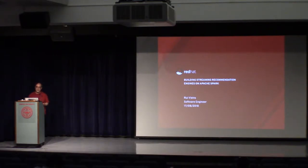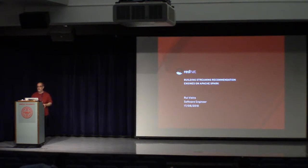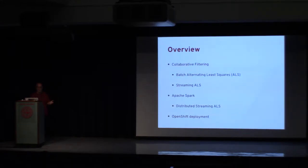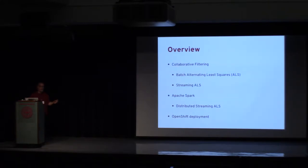I'd like to talk about batch recommendation engines, which is a common approach, and also how easy it is to build distributed recommendation engines on one hand. On the other hand, building them in a streaming and distributed way can be tricky. I'll introduce collaborative filtering, the two variants — batch alternating least squares and streaming alternating least squares — Apache Spark, and an implementation called distributed streaming ALS. Finally, I'll talk about deploying these setups on a modern cloud environment such as OpenShift.